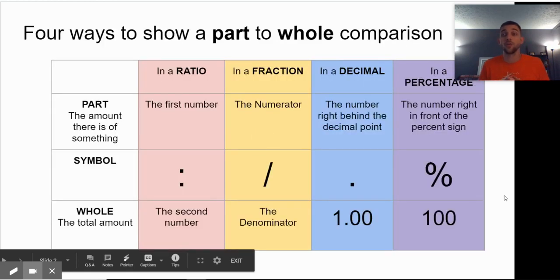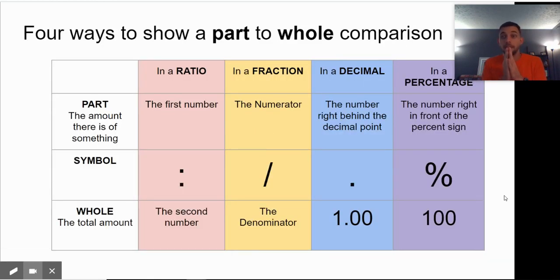First, let's note that these are all four different ways of doing the same thing. In a ratio, the first number is the part. In a fraction, the numerator is the part. In a decimal, the number after the decimal point is the part, or the number as a whole is the part, and one is the whole.